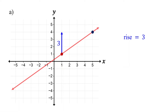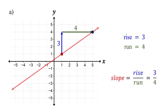Then, find the run. Start from where you left off, and count how many units you move to the right to reach the point on the right. We move four units, so the run is four. Finally, find the slope by dividing the rise by the run. Notice that the slope is positive, meaning the line goes up as you move from left to right.